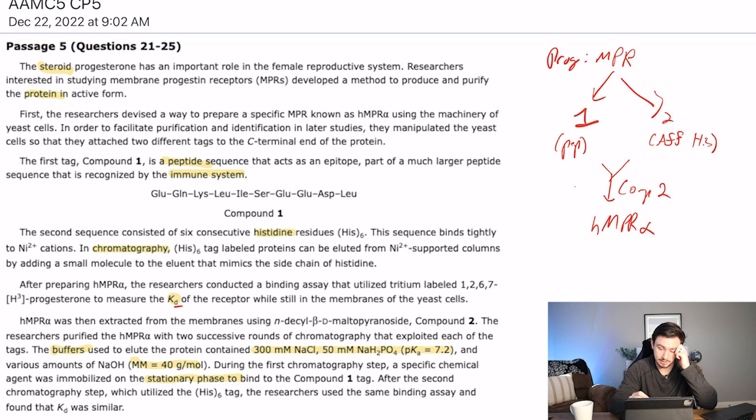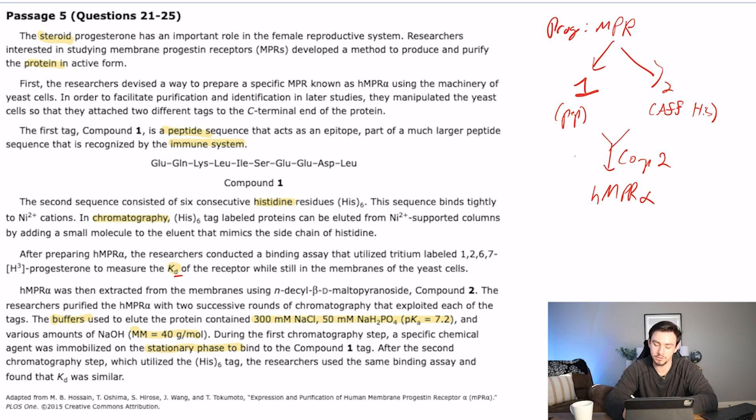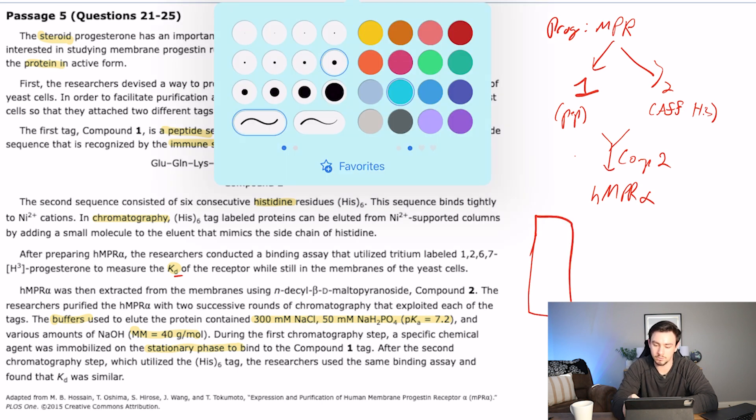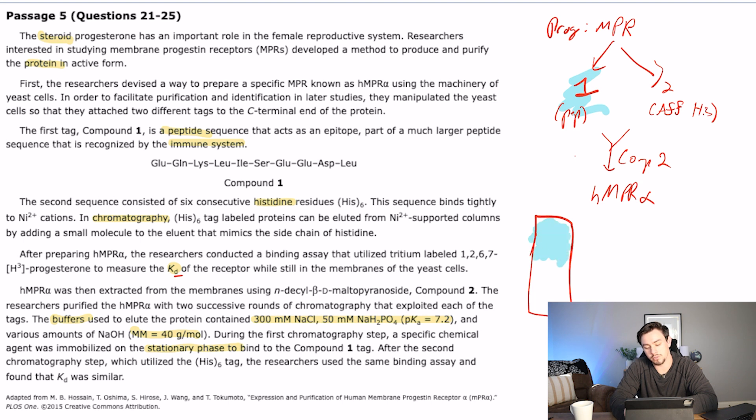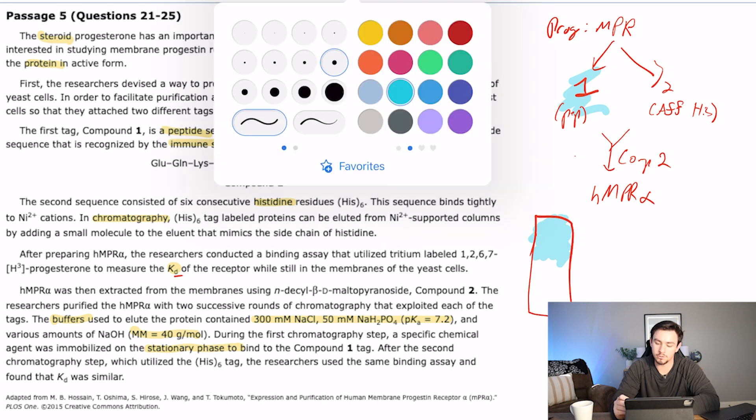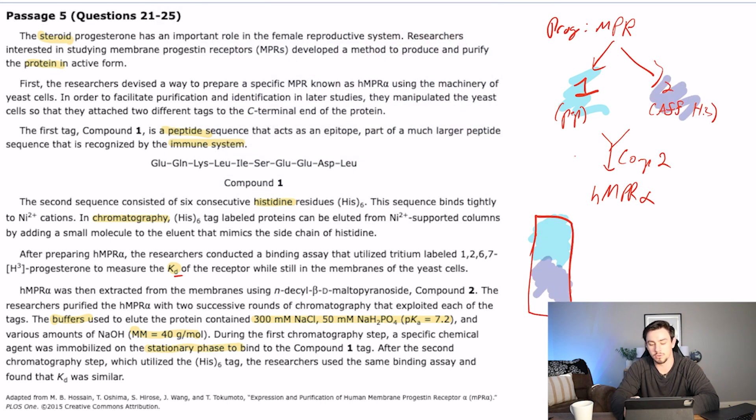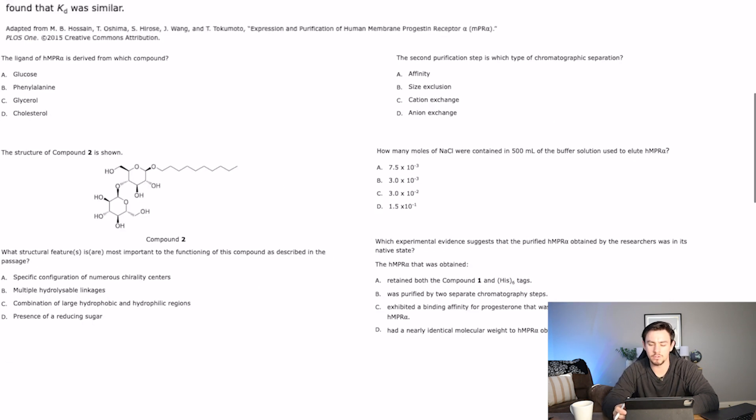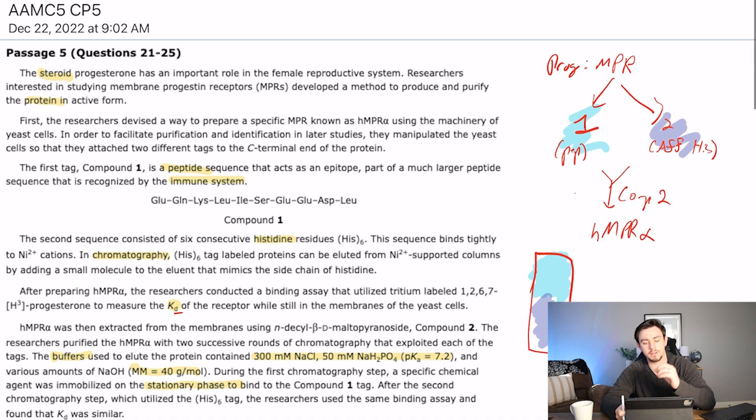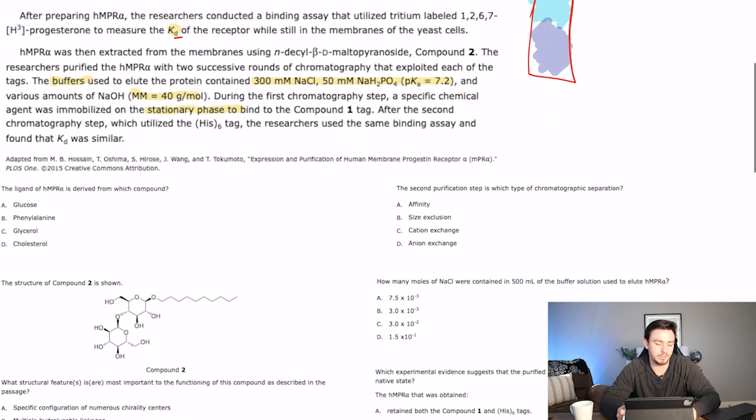After the second chromatography step, which utilized the histidine tag, the researchers used the same binding assay and found that KD was similar. Okay, so their process of taking what they thought was HMPR alpha and running it back through these purification steps was successful. And just to make sure I've illustrated this point, what they're doing is they're taking this big chromatography tube and they are putting the particles through a tube that separates for compound 1 and then they're putting the particles through a tube that separates for compound 2. And so whatever comes out at the end should be pure HMPR alpha.